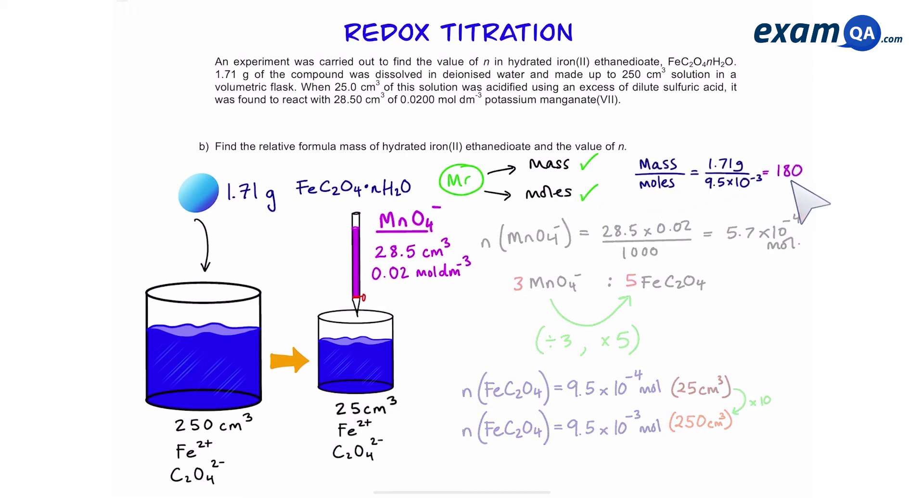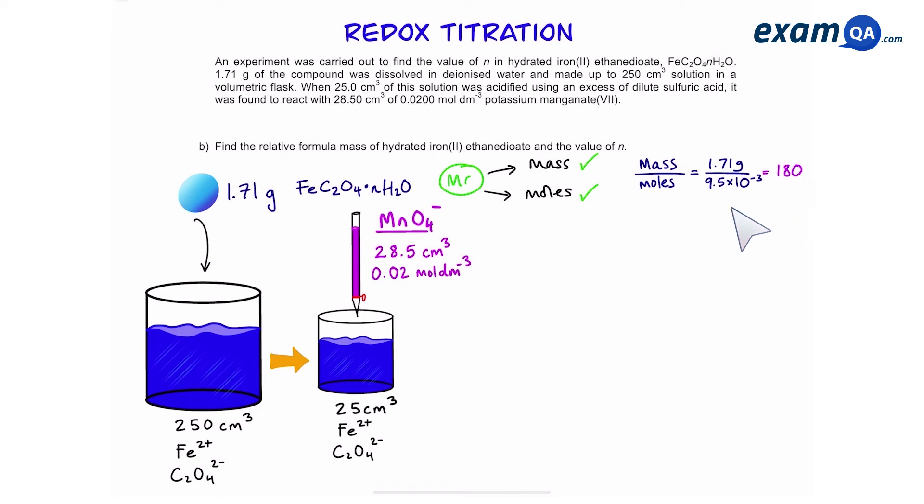For the final part we're then going to work out the value of n. So we're going to write the equation like this. So we're going to subtract the value of FeC₂O₄ from both sides. That leaves us with nH₂O is equal to 36. Then we're going to divide both sides by the value of water which is 18. And that gives us a final answer of n equals 2.